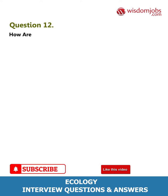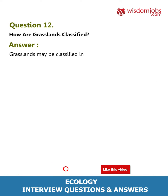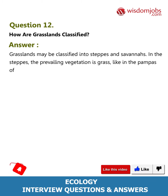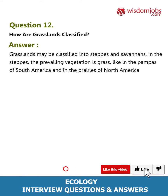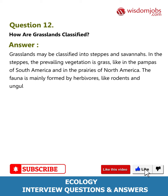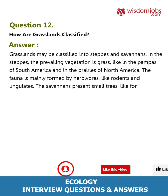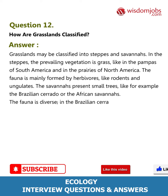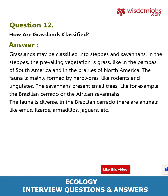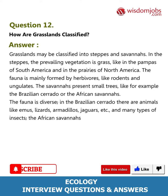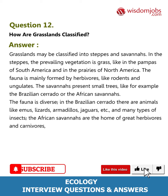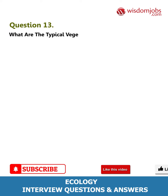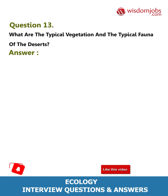Question 12: How are grasslands classified? Grasslands may be classified into steppes and savannas. In steppes, the prevailing vegetation is grass-like, as in the pampas of South America and the prairies of North America; the fauna is mainly formed by herbivores like rodents and ungulates. Savannas present small trees, like the Brazilian cerrado or the African savannas. The fauna of the Brazilian cerrado includes emus, lizards, armadillos, jaguars, and many insects. The African savannas are home to great herbivores and carnivores like zebras, giraffes, antelopes, lions, and leopards.